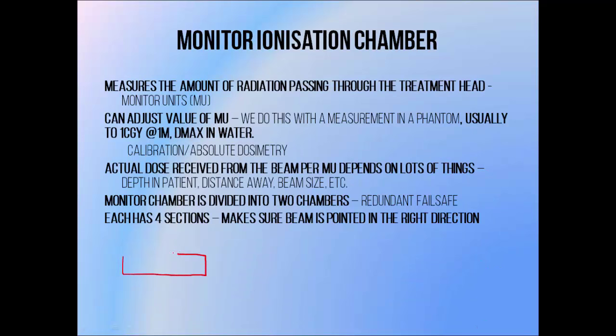Below the scattering foil or flattening filter is a monitor chamber. The monitor chamber is an ionization chamber, which is a device for measuring amounts of radiation. The beam passes through it before it leaves the treatment head, allowing the monitor chamber to keep track of the amount of radiation leaving the linac. This allows us to pre-set how much radiation we want to deliver using a given beam, by telling the machine to shut off after the monitor chamber measures a certain amount of radiation.